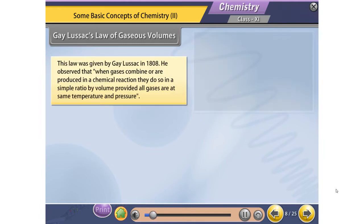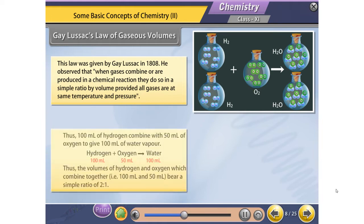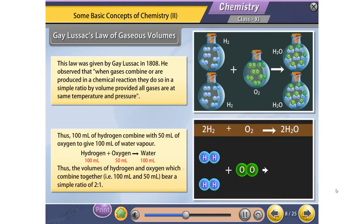Gay-Lussac's Law of Gaseous Volumes was given by Gay-Lussac in 1808. He observed that when gases combine or are produced in a chemical reaction, they do so in a simple ratio by volume, provided all gases are at the same temperature and pressure. For example, 100 ml of hydrogen combined with 50 ml of oxygen to give 100 ml of water vapor.